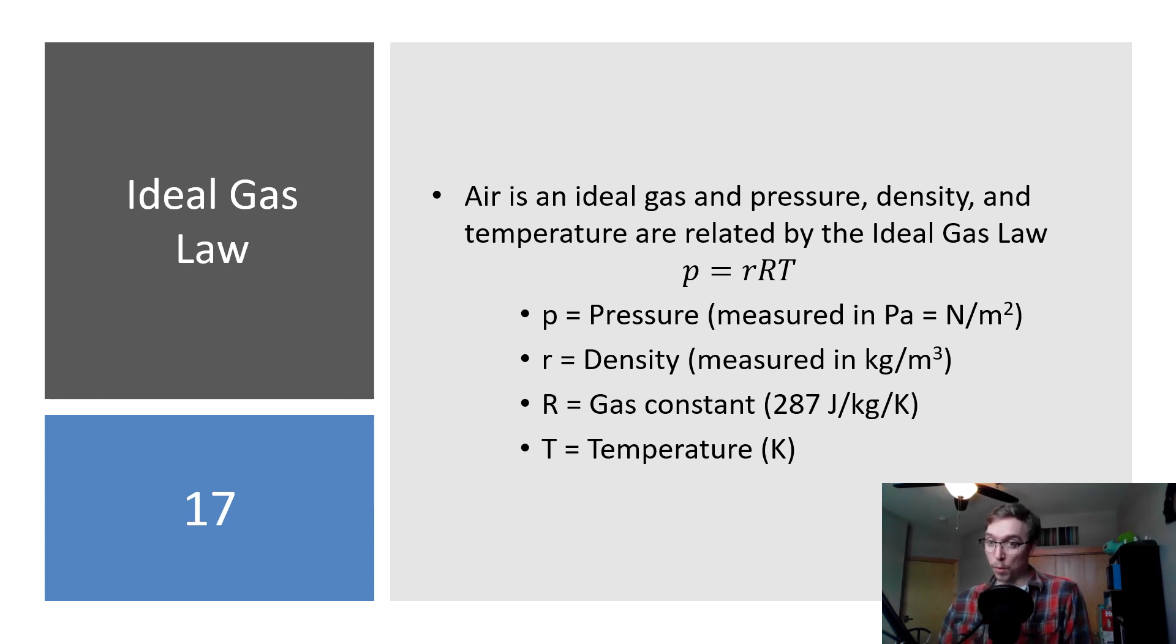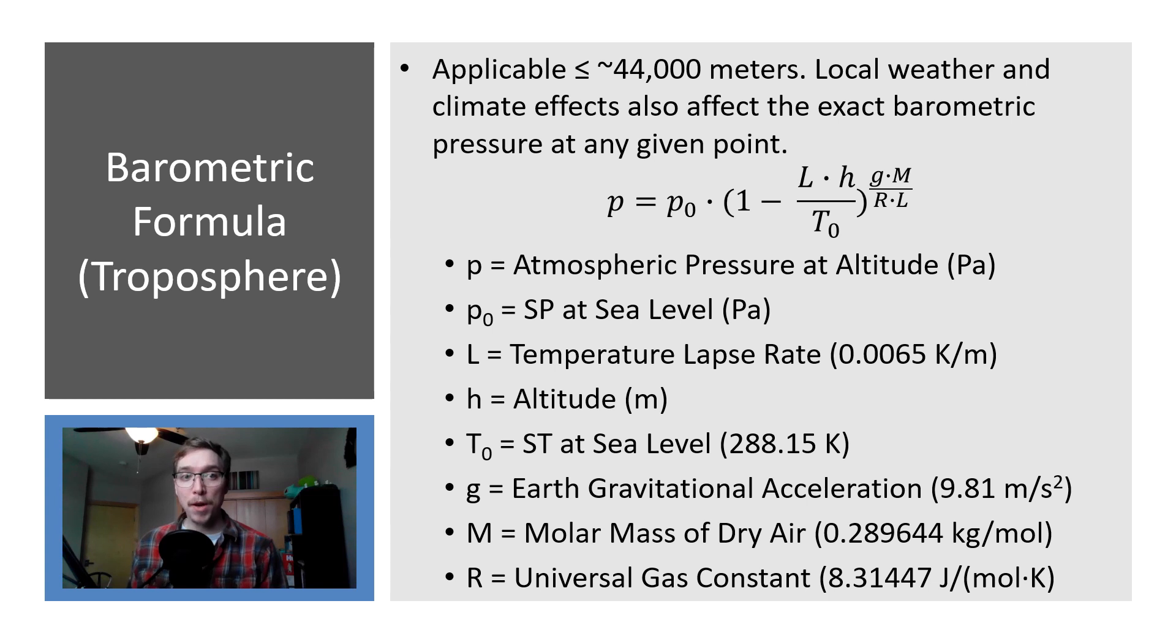So our next formula, the barometric formula, exists and is effective only within our troposphere. So this is another important one, our barometric pressure formula. This is within the troposphere itself. Because pressure changes, density changes as we go in different quantities in different layers of the atmosphere, this is only applicable to troposphere, so somewhere below about 44 kilometers or 44,000 meters is where we can use these equations. Local weather and climate effects can also affect the exact barometric pressure at a given point, but this gives you a good idea.